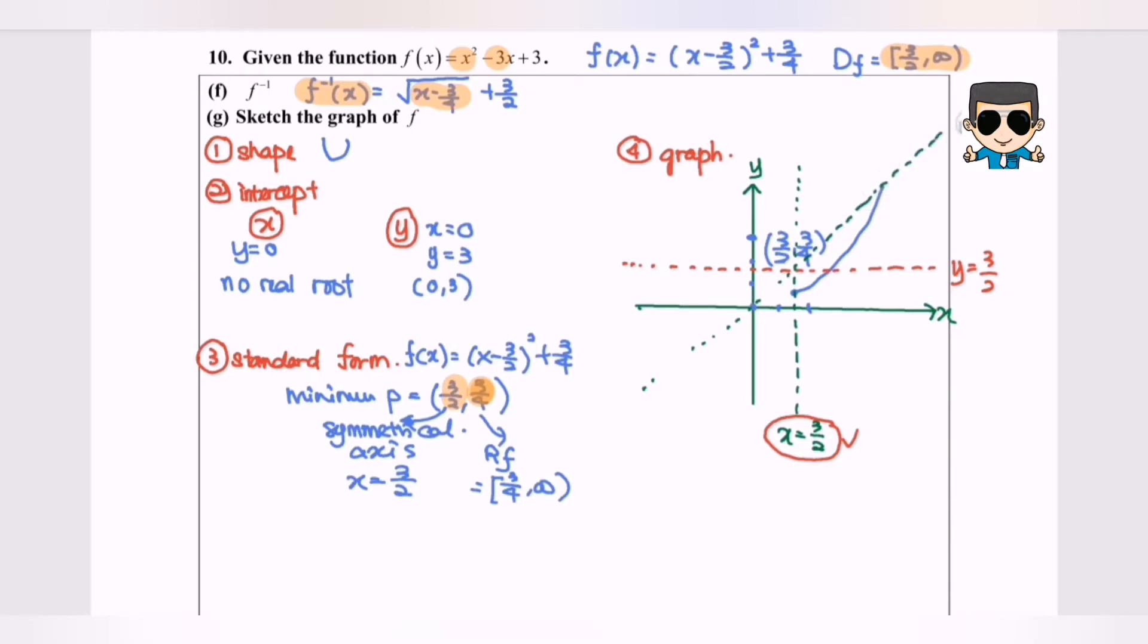So y equals x. Now in order to sketch the F inverse, we basically have a minimum point, 3 over 2 and 3 over 2. Now we need to transform them, so it becomes 3 over 4 and 3 over 2.